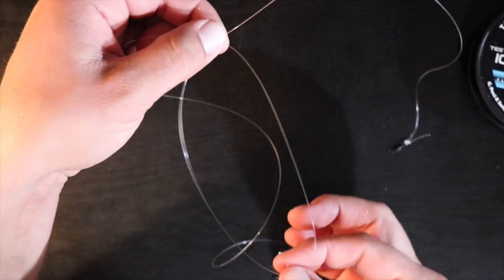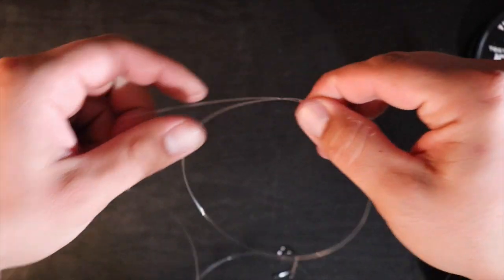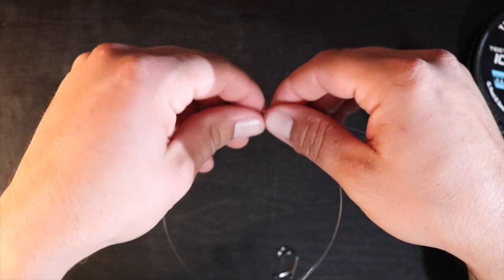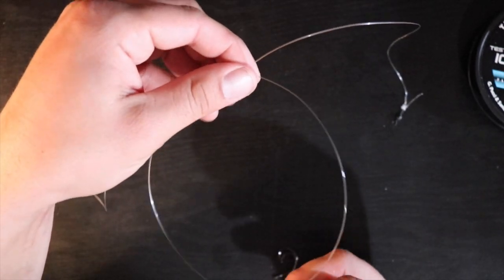You'll see that if you've been tying double drop pompano rigs, it's the exact same thing. The only difference between the pompano and the whiting is what we're actually going to put on these drops. But I'm going to go ahead and show you all the whole process.